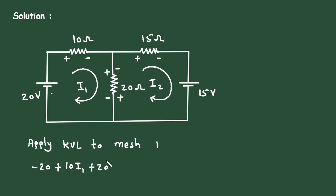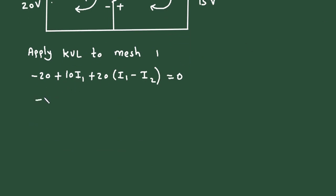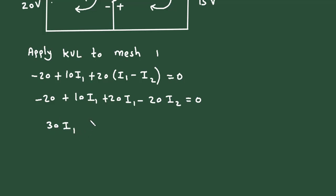This 20 ohm resistor is common to both mesh 1 and mesh 2. Since we are currently solving for mesh 1, it will be I1 minus I2. The loop is now completed, so it equals 0: minus 20 plus 10 I1 plus 20(I1 minus I2) equals 0, which simplifies to 30 I1 minus 20 I2 equals 20. This is equation number 1.